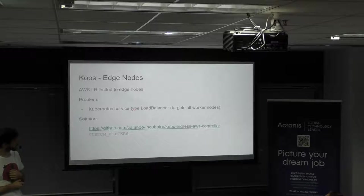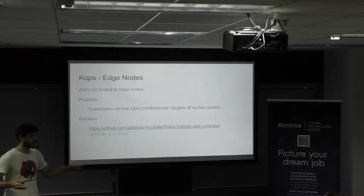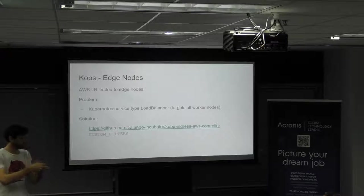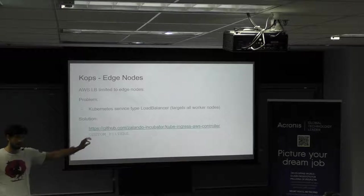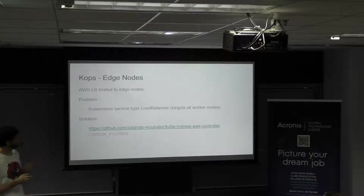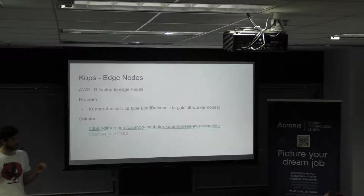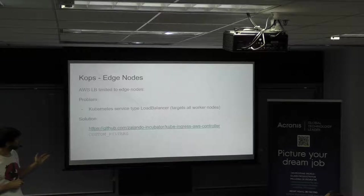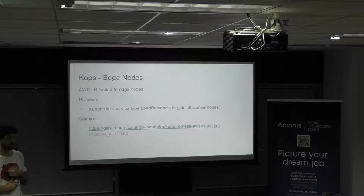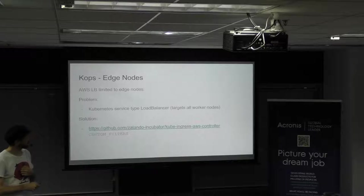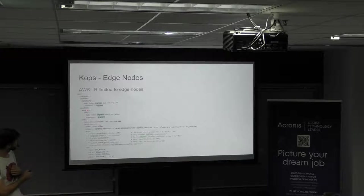How do you set up a load balancer that only hits edge nodes? The problem is that Kubernetes service type LoadBalancer by default hits all nodes. Kubernetes has three service types: ClusterIP (internal only), NodePort (opens a port on every node via iptables), and LoadBalancer (creates a NodePort plus a cloud provider load balancer pointing to every node). I can't use the default service LoadBalancer. There's a great project from Zalando called kube-ingress-aws-controller that allows custom node filters.